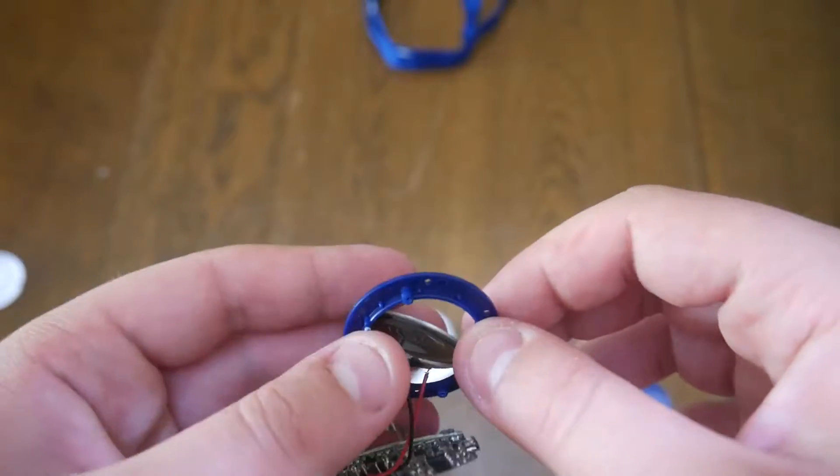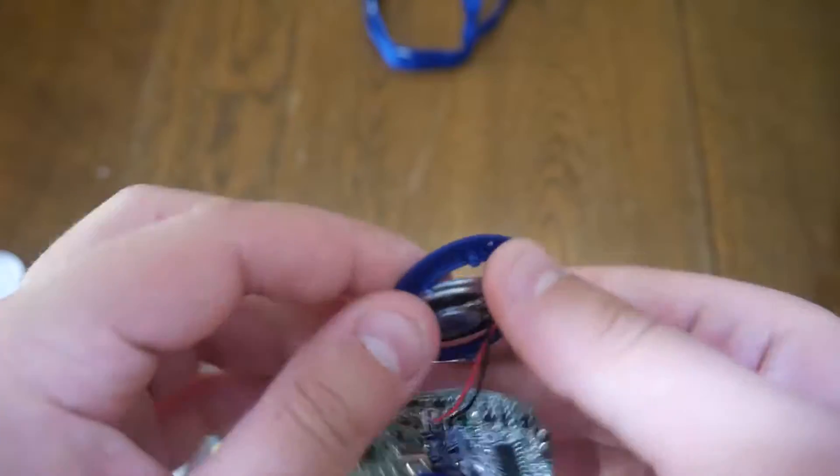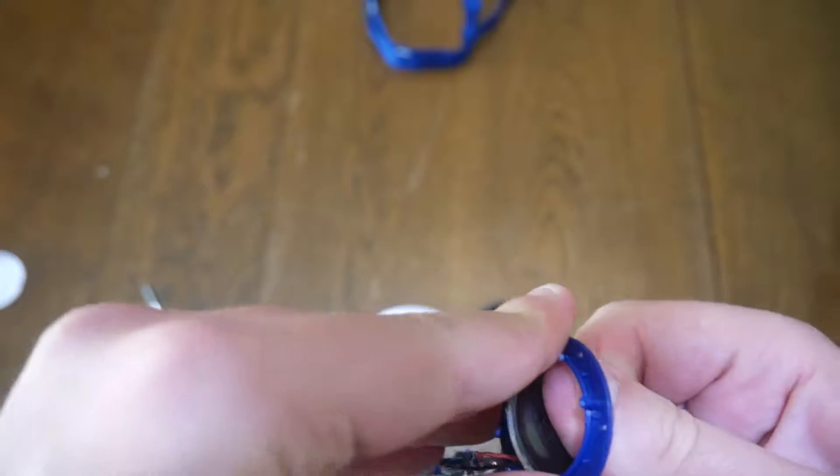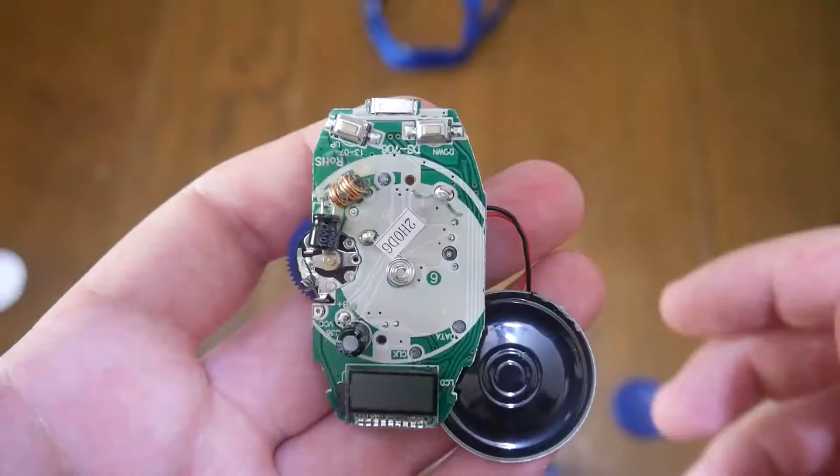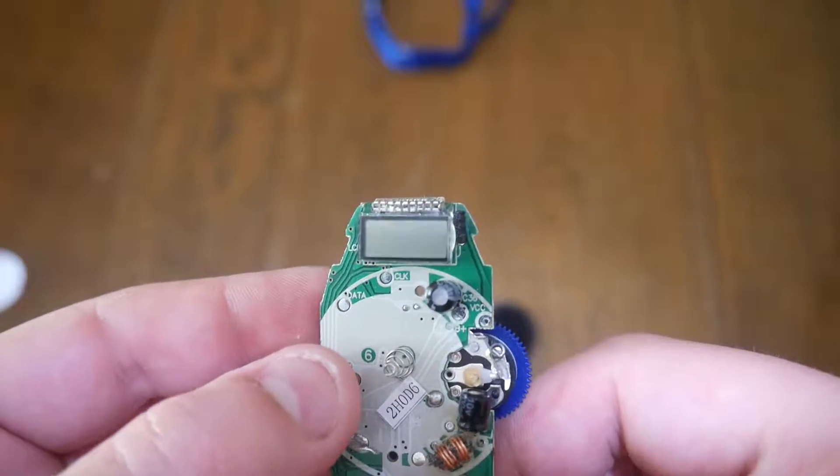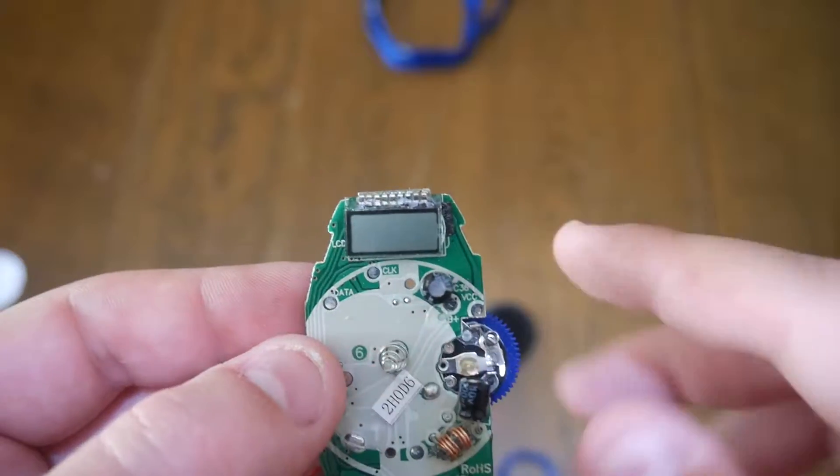As you can see, there's the speaker, and here's the screen. This is where the battery goes. Turning it over, there's a variable resistor which is how you handle volume and on/off.